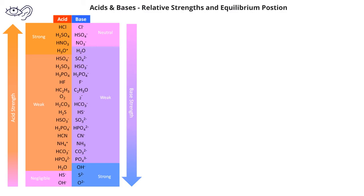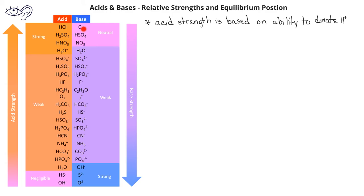The stronger the acid — for example, hydrochloric acid — the weaker is its conjugate base. HCl is a strong acid, but its conjugate base, the chloride ion, is essentially neutral. On the other hand, a weak acid will have a fairly weak base as well, but as the acid strength decreases, the base strength increases.